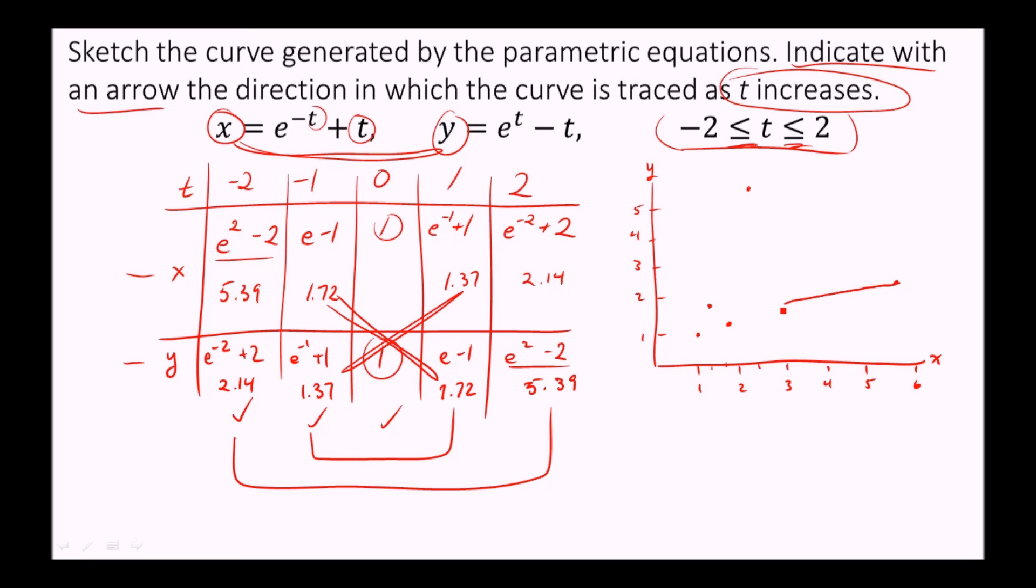We just connect the dots in the order in which we plotted the points. And just trace it from negative two to two. Then we put an arrow in which we traced it, indicating how it was traced as the t value increased from negative two to two. The parameter was increasing, thus tracing the graph via the parametric equations.